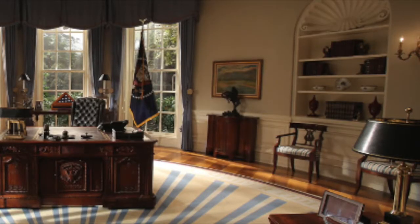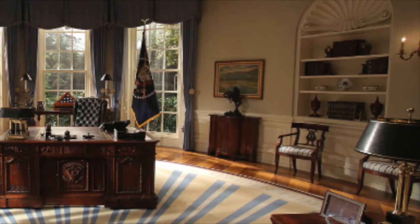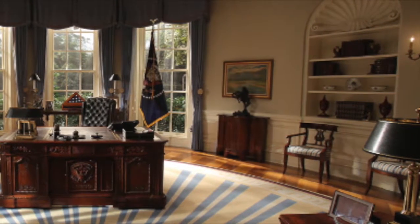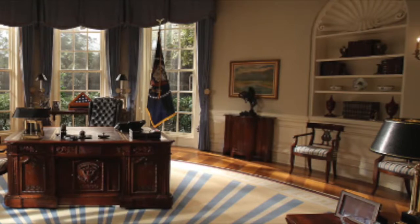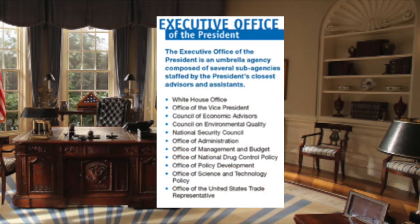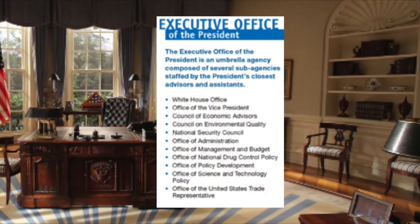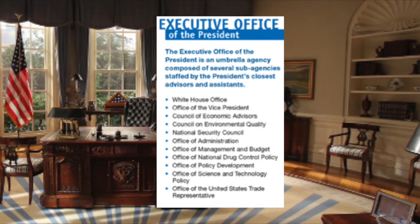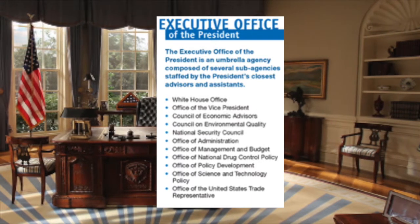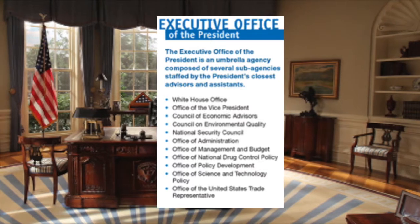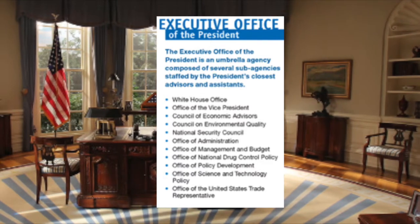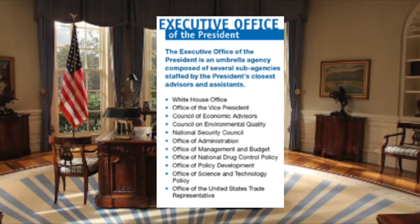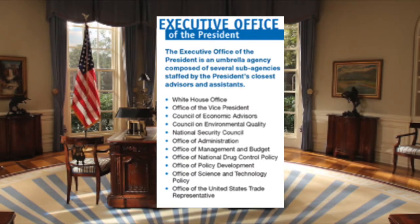Every officer, employee, and agency in the executive branch of the federal government is legally subordinate to the president. They all exist to help him. But the president's right arm is the executive office of the president. The EOP is, in fact, an umbrella agency — a complex organization of several separate agencies staffed by some 1,800 of the president's key advisors and assistants.